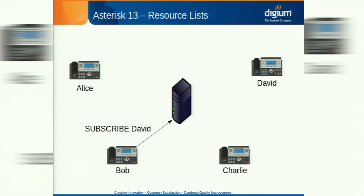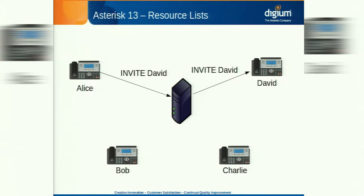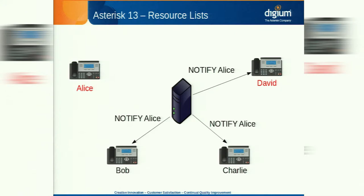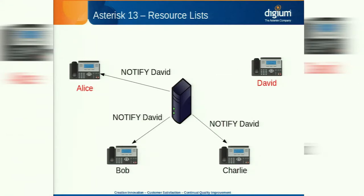We can do better with resource lists. Instead of individual subscriptions, I can create a buddy list — maybe everybody in the company, or custom lists, even lists of lists. Everybody subscribes to the Asterisk server for the list, sending just one SUBSCRIBE request each. When Alice calls David and they both go busy, Asterisk waits a very small amount of time to let all the state changes aggregate, then sends out one NOTIFY to everybody with the full buddy list status. Everybody gets the notification about Alice and David in a single event.